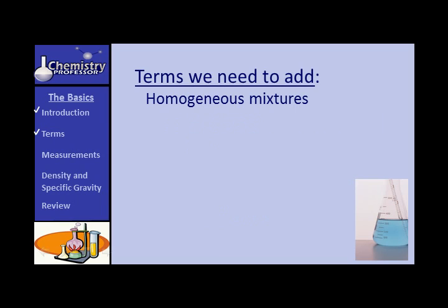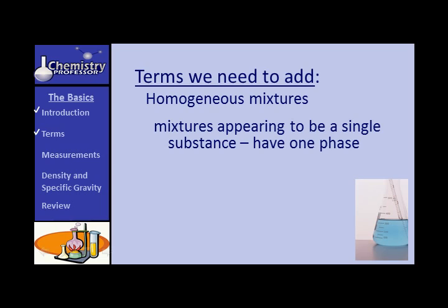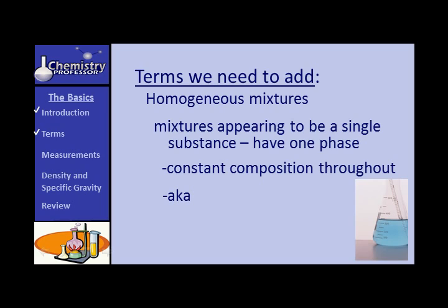Homogeneous mixtures — sometimes called homogenous — are mixtures that appear to be a single substance. You cannot visibly discern where one material stops and the other starts. In other words, it appears to have one phase. A saltwater solution is a good example. A homogeneous mixture will have a constant composition throughout. An alloy is another example. Homogeneous mixtures are also known as solutions — even though they are not necessarily liquid. They can be solid, gaseous, or any combination of states of matter.